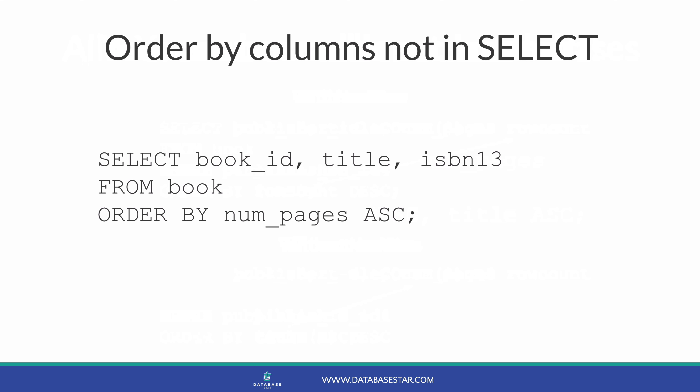Another tip is that in SQL you can order by columns that are not shown in the SELECT clause. For example, this query shows the book ID, title, and ISBN for a book, and the results are ordered by the number of pages in ascending order. The number of pages is not shown in the results, but you can still order by this field. This might not be something you want to do very often, but it's good to know it's possible.